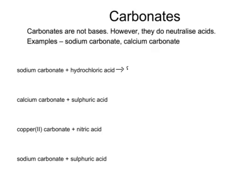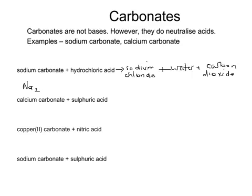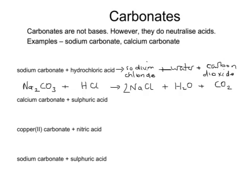The first one: sodium carbonate and hydrochloric acid will make sodium chloride — that'll be the name of the salt — plus water plus carbon dioxide. In symbols: sodium carbonate, Na₂CO₃, plus hydrochloric acid, HCl, gives sodium chloride, NaCl, plus water, H₂O, plus carbon dioxide, CO₂. In terms of balancing, there are two sodiums on the left-hand side and only one on the right, so we need to put a 2 in front of NaCl. We've now got two chlorines on the right, so we put a 2 in front of HCl, which also balances the number of hydrogens on the right-hand side.